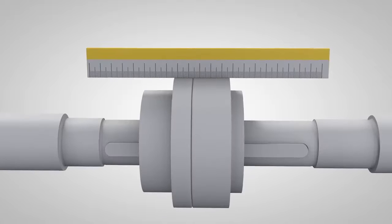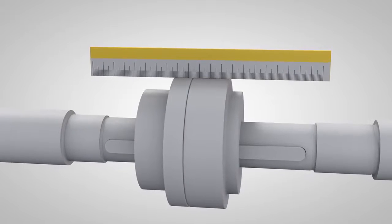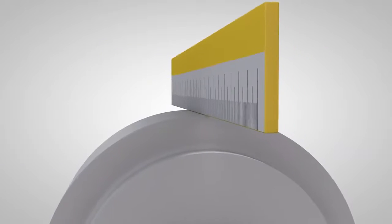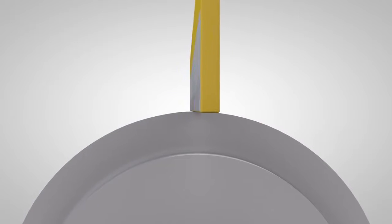Today, three alignment methods are commonly used. Straight edges or eyesight, which are fast and easy methods but not accurate.